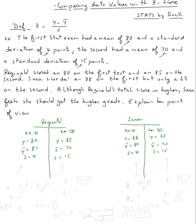So if you calculate the z-score for Reginald, there are two z-scores. One of them is y minus y-bar over s, which is 80 minus 80 over 4, so that's zero.